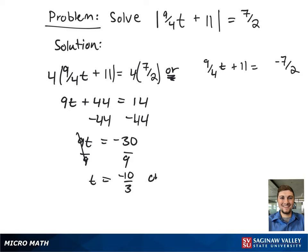So moving to the right hand side of the equation, again, our least common denominator is 4, so we're going to multiply out both sides by 4 to clear the fractions. This gives 9t plus 44 equals negative 14.